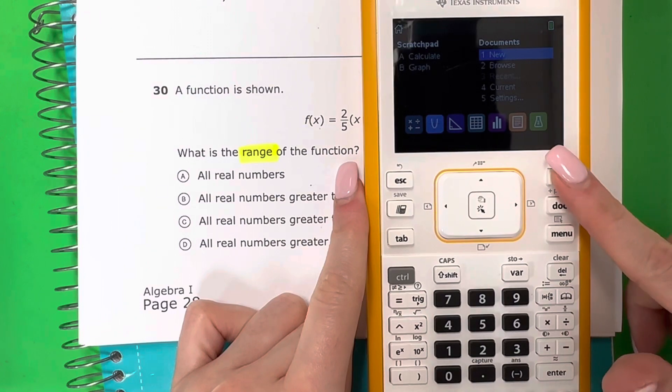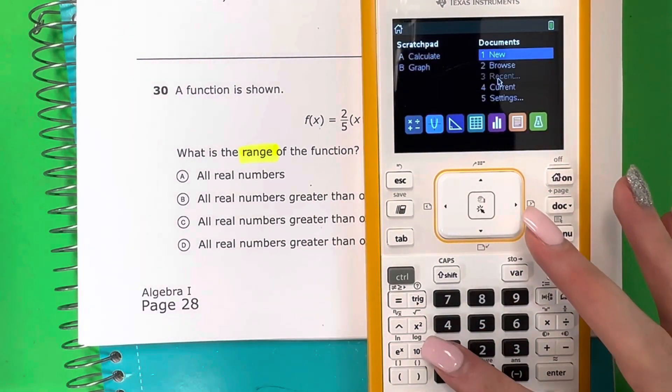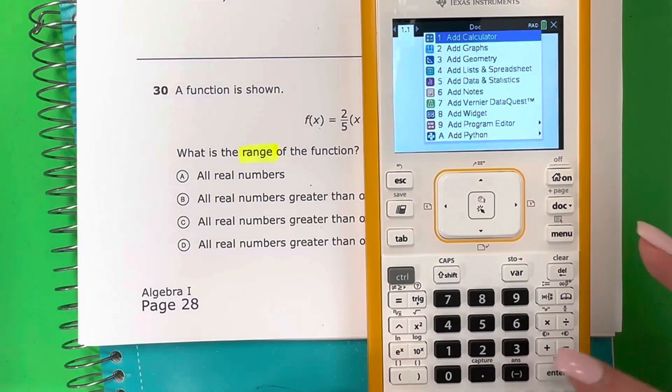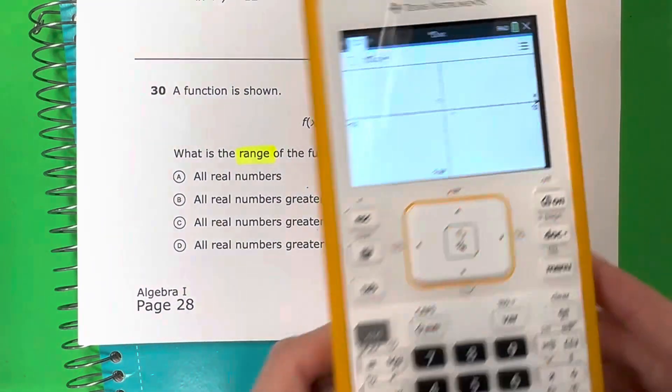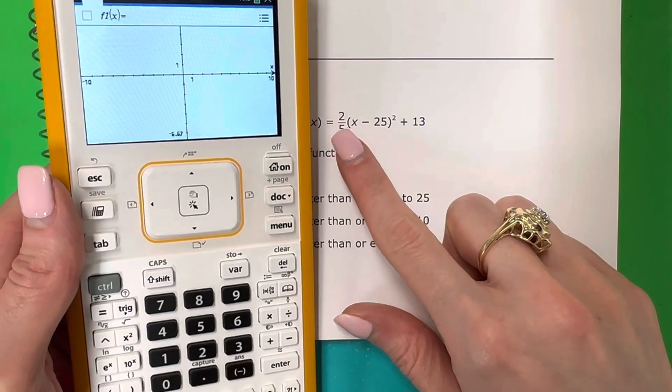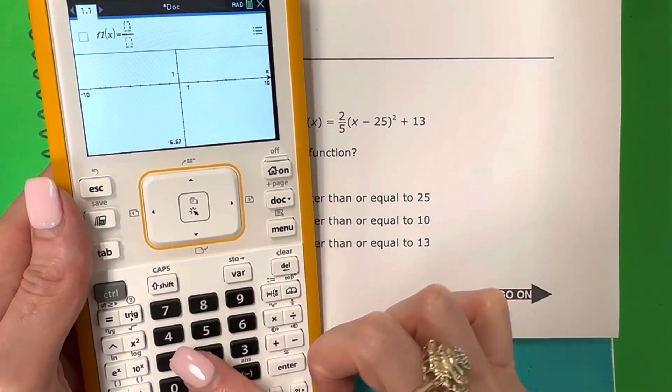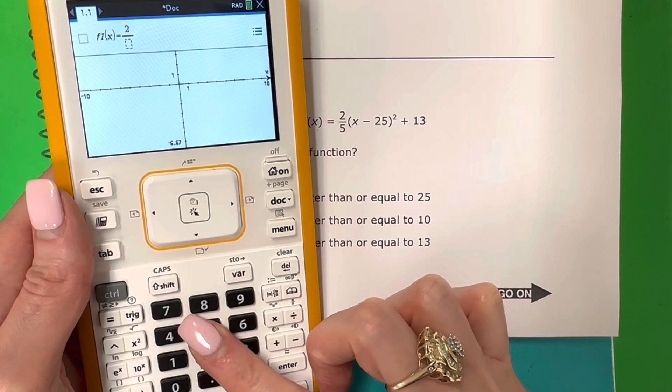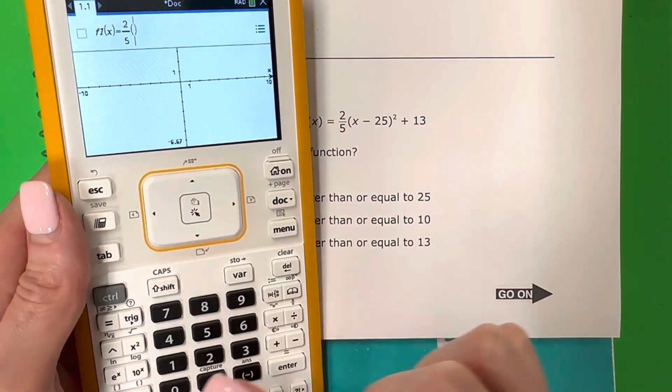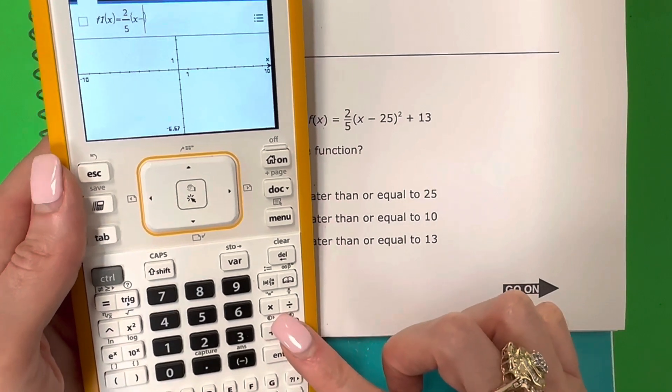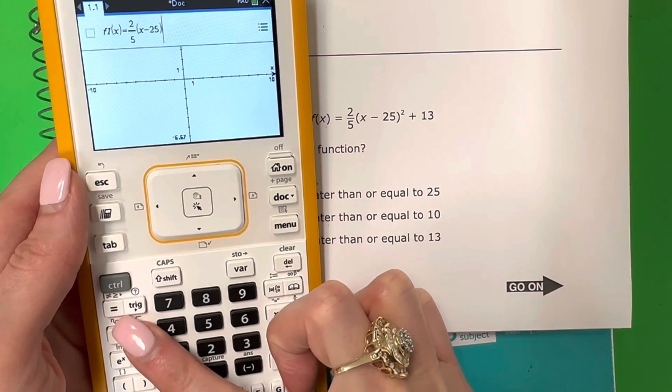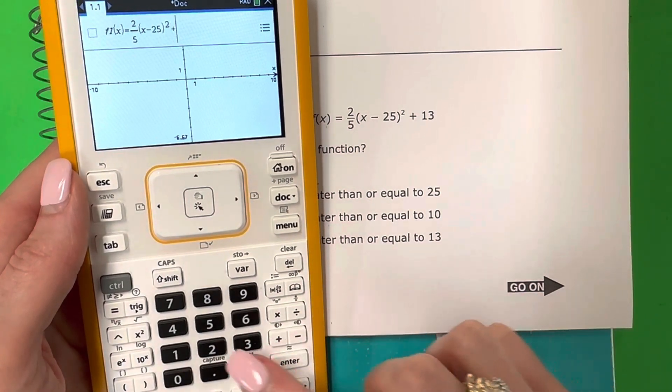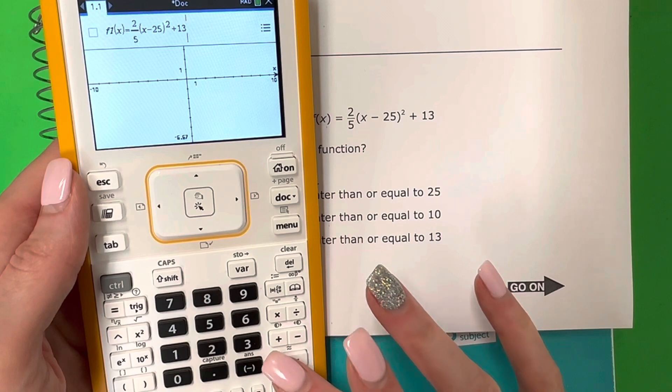Push on, and then we're going to enter into the calculator. We're going to push one, and then we need to go to the graph for this one because I need to see the range. So let's go to two, and we're going to put that in the calculator exactly the same. I'm going to do control, divide, two, then go down, five, go to the right, open your parenthesis, and I'm going to do x minus 25, close your parenthesis. I'm going to put the squared, which is right over here, and then plus 13, and then push enter.